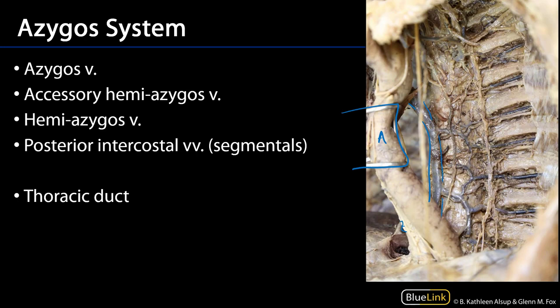There are going to be two major tributaries. Here is the accessory hemi-azygos vein, which will be draining intercostal spaces 5 through 8. And here is the hemi-azygos vein, which is going to be draining intercostal spaces 9 through 11, as well as the subcostal vein and the ascending lumbar vein on the left side.